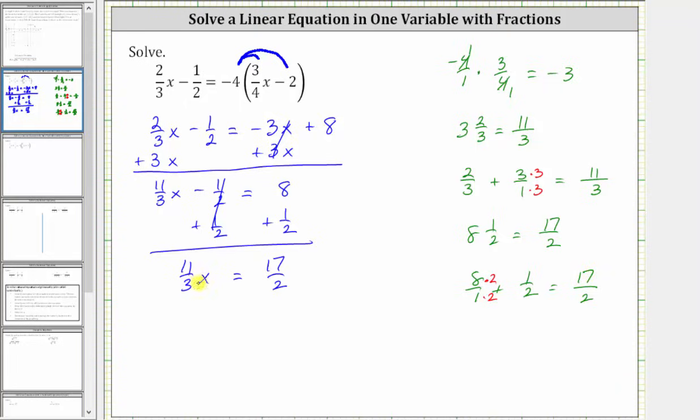And then finally, now we multiply or divide to solve for x. 11/3x means 11/3 times x, so we may be thinking we should divide by 11/3, but remember, dividing by 11/3 is equivalent to multiplying by the reciprocal of 3/11. So for the last step, we will multiply both sides of the equation by 3/11.